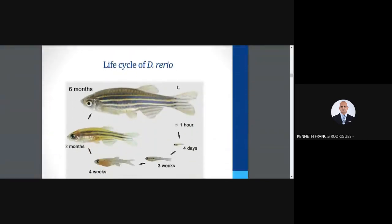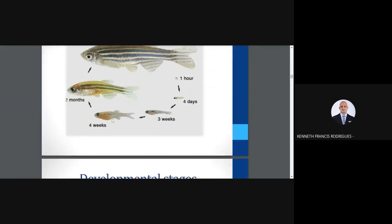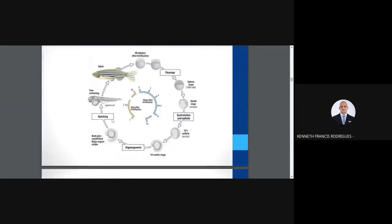The life cycle of Danio rerio is spread over approximately six months, which is very convenient for laboratory research. Beginning with the adult, the embryos go through developmental stages at four days, three weeks, four weeks, and finally at three months they attain maturity, at which age they generally produce eggs.